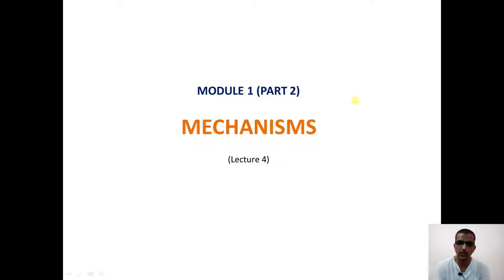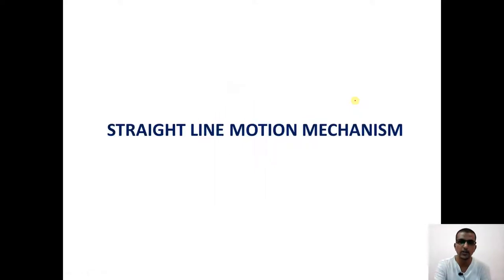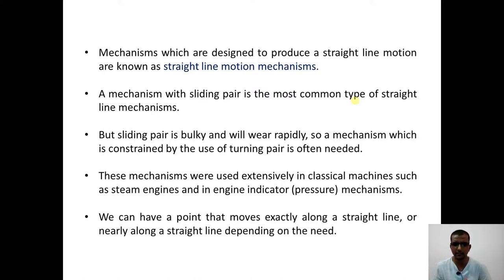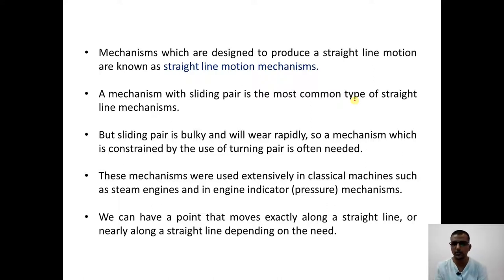Welcome to lecture number four on mechanisms. So far in the previous lectures we discussed about mechanisms which can generate quick return motion. In this lecture we will start with mechanisms which can generate straight line motion. Mechanisms designed to produce straight line motion are called straight line motion mechanisms. Any mechanism with a sliding pair becomes a classic example, but they are very bulky, wear rapidly, and are not so convenient. Often we require a mechanism wherein a turning pair is used to generate a straight line. These straight line mechanisms are used in steam engines or any other engines to indicate the engine pressure.